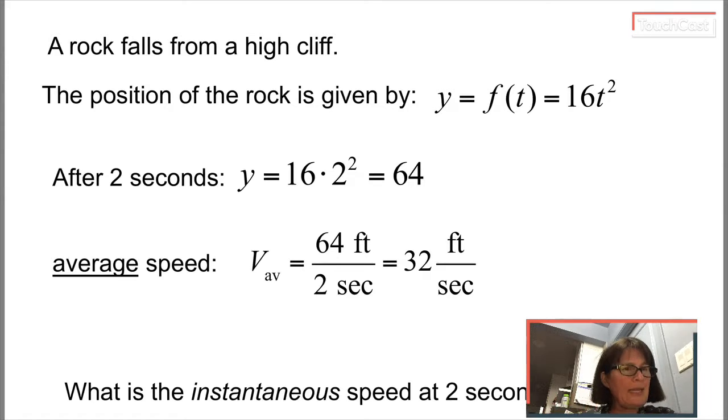And we kept letting that get smaller, and it seemed like that all of that average speed was getting closer and closer and closer to this one number. So we had another idea that maybe the instantaneous speed is 64 feet per second.